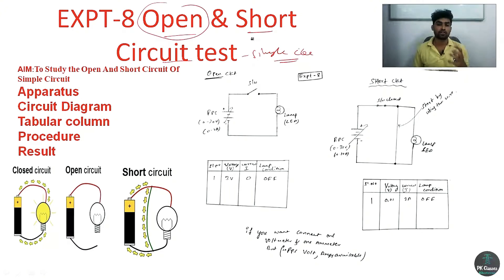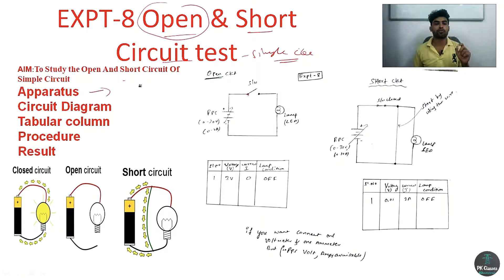Let's start the experiment. The aim is to study open and short circuit tests of a simple circuit. The apparatus required includes an RPS, one switch, and a lamp. In the circuit diagram for the open circuit test, supply is given by the RPS, the switch is open, and the lamp is connected.